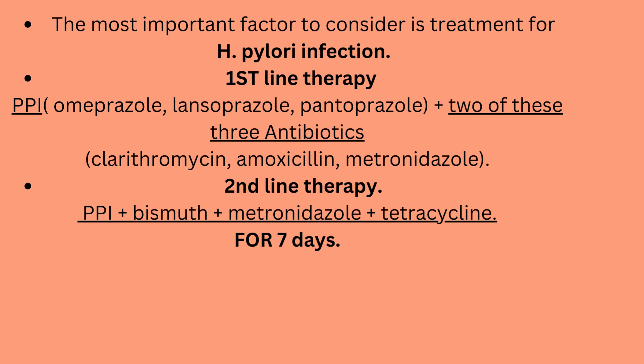Prevention. The most important factor to consider is treatment for H. pylori infection. First-line therapy: PPI (omeprazole, lansoprazole, pantoprazole) plus two of these three antibiotics — clarithromycin, amoxicillin, metronidazole. Second-line therapy: PPI, bismuth, metronidazole, tetracycline for 7 days.